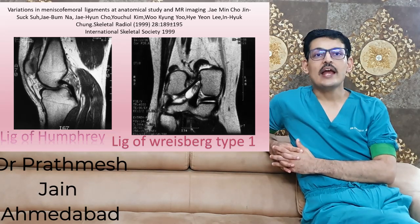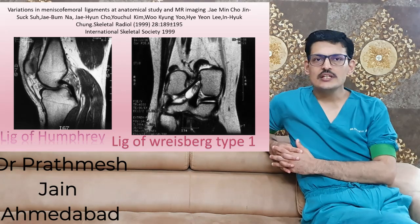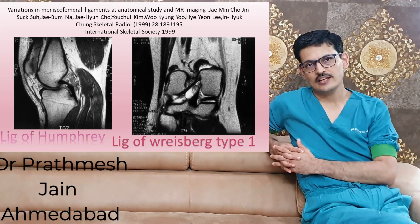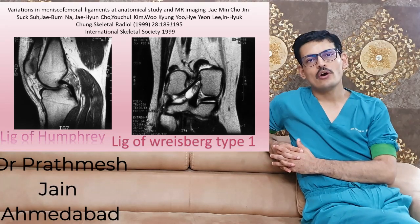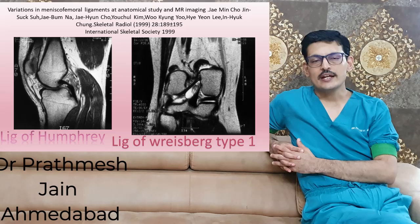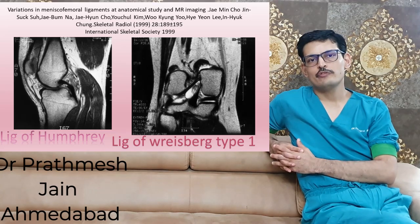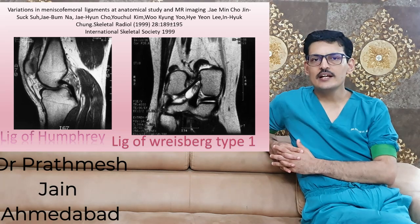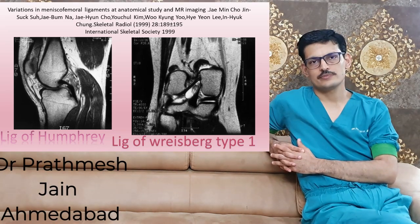The ligament of Humphrey is anterior to the PCL and occasionally it is seen as a double PCL sign, which is usually a sign for a locked medial meniscus. So an anterior ligament of Humphrey can be confused with a locked meniscus. It is a thinner ligament and it is usually seen in fewer patients.